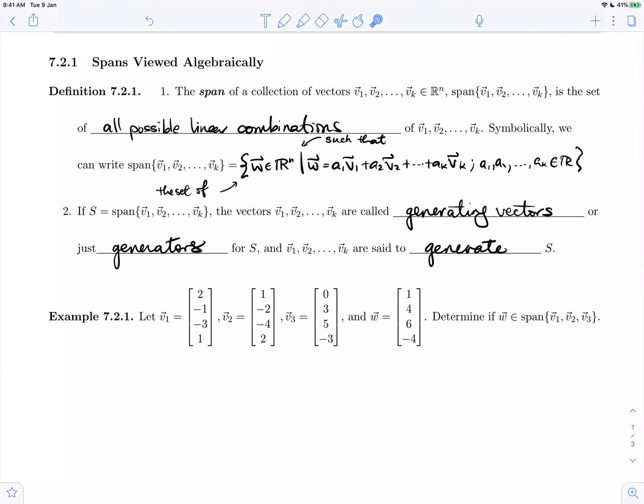Let's go back and look. The span is all possible linear combinations of these vectors. And so that means that w is in the span of v1, v2, v3 if and only if w is a linear combination of these vectors.